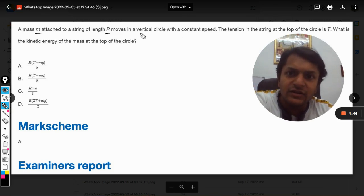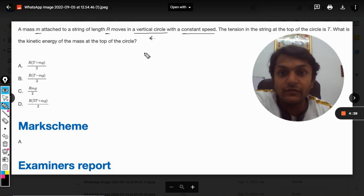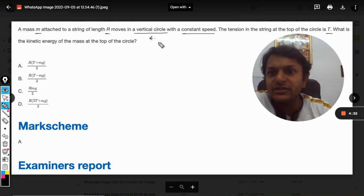in a vertical circle with a constant speed. The tension in the string at the top of the circle is T. What is the kinetic energy of the